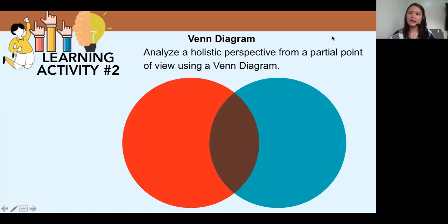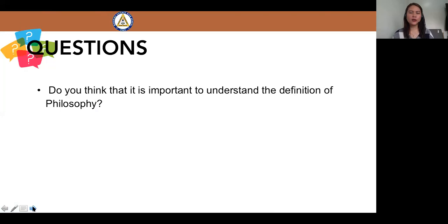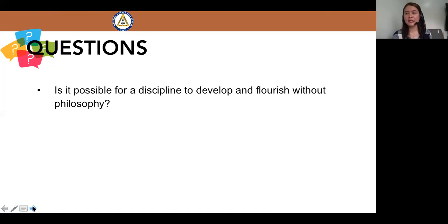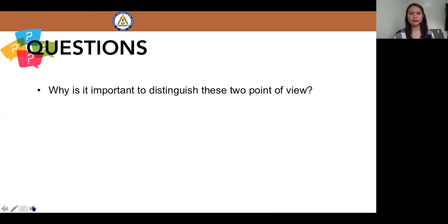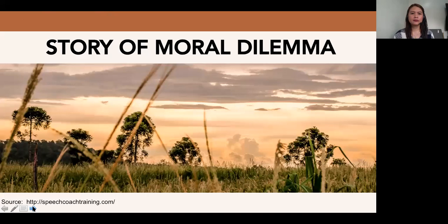So, I want you to analyze holistic perspective and partial point of view using Venn diagram. And I want you to answer these questions. Do you think that it is important to understand the definition of philosophy? Is it possible for a discipline to develop and flourish without philosophy or love for wisdom? What is the difference between holistic perspective and partial point of view? Why is it important to distinguish two point of view?